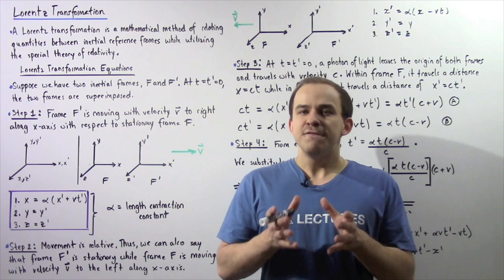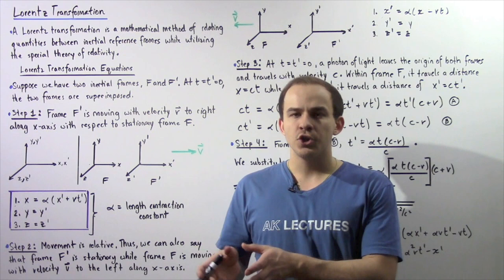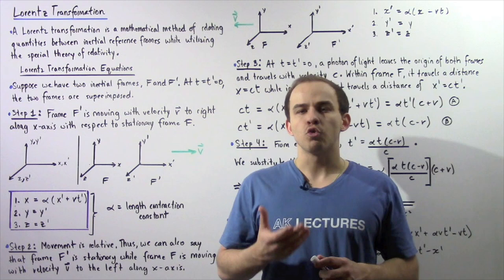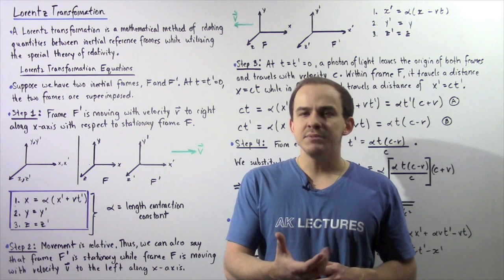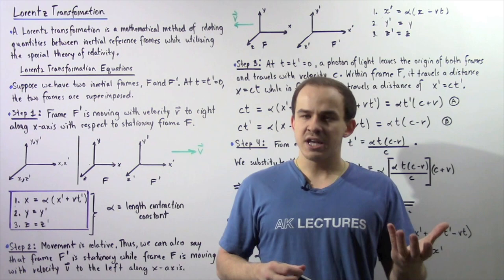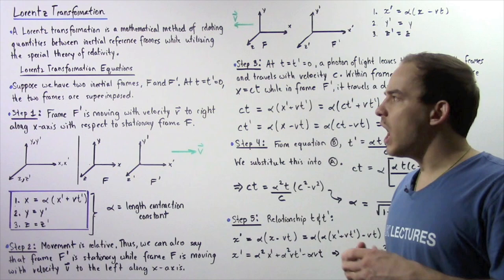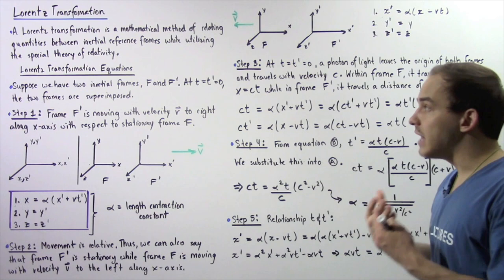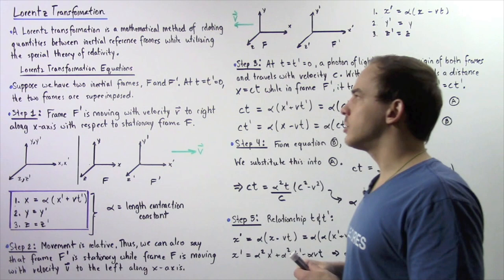A Lorentz transformation is a mathematical way of relating physical quantities that describe objects between two different inertial reference frames, while taking into account the special theory of relativity. A Lorentz transformation incorporates time dilation and length contraction of quantities such as time and length. In this lecture, we're going to derive the Lorentz transformation equations that allow us to make these relations between two different inertial reference frames.